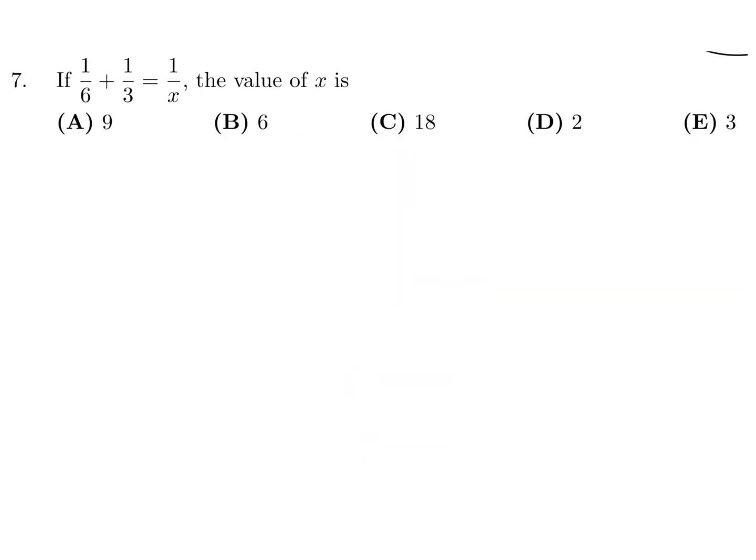1 over 6 plus 1 over 3 is 1 over x. What is x? Let's get a common denominator, so that would be 2 over 6. And therefore, that would be 3 over 6 is 1 over x, or 1 over 2 is equal to 1 over x. And then if you flip it, you get x equal to 2. And therefore, number 7, the answer is D.